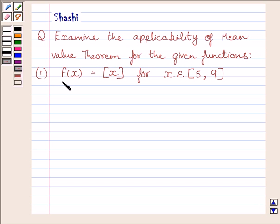First part is, f(x) is equal to greatest integer of x for x belonging to closed interval [5, 9].